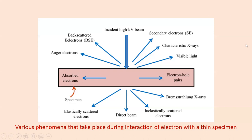Secondary electrons are ejected from atoms in the specimen. The term is usually used for electrons that have energies below 50 electron volts. Such electrons can include primary electrons that lose their energies through successive scattering and reach the surface of the specimen. Secondary electrons are produced in abundance and form the basis for the working of scanning electron microscopy.